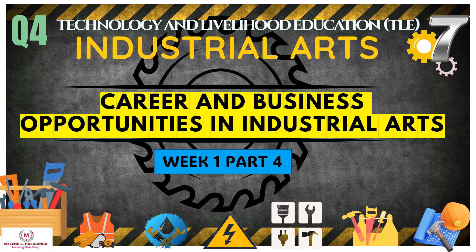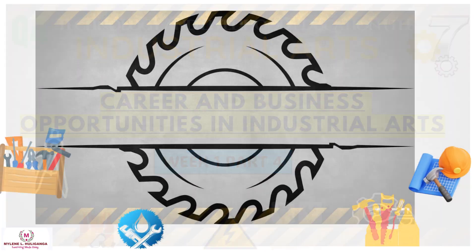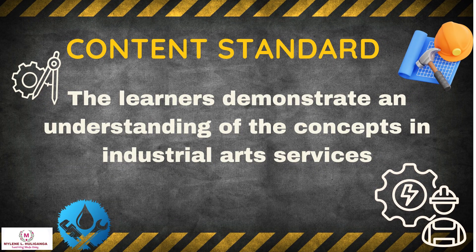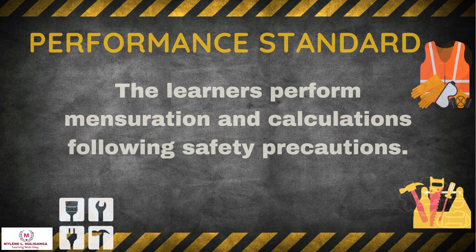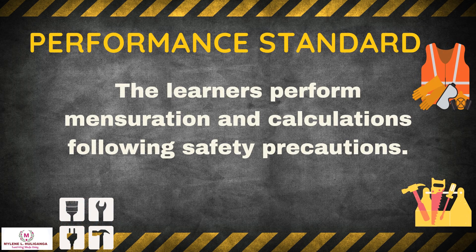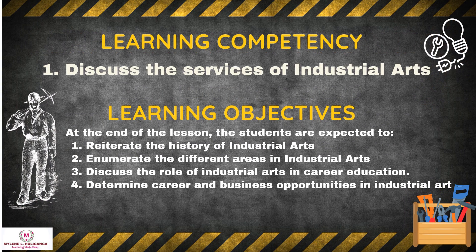Technology and Livelihood Education: Industrial Arts for Grade 7, Quarter 4, Week 1, Part 4. Our topic is career and business opportunities in industrial arts. The content standard is: learners demonstrate an understanding of the concepts in industrial arts services. The performance standard is: learners perform mensuration and calculations following safety precautions. Here are the learning competency and learning objectives for this lesson.